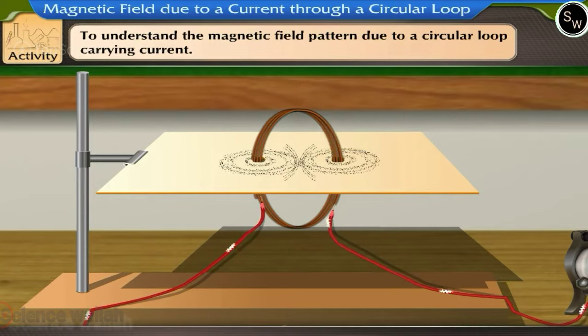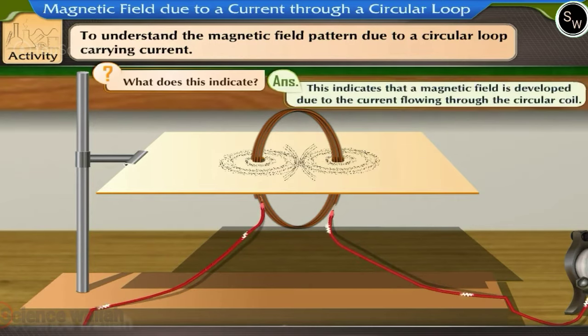What does this indicate? This indicates that a magnetic field is developed due to the current flowing through the circular coil.